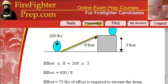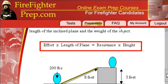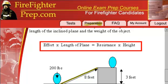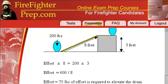There are lots of practice questions on the site — work through them and be familiar with them. I'd recommend you memorize this formula: effort times the length of the plane equals resistance times the height. You might be given different scenarios, such as being given the effort — say 75 pounds — and the length of the plane at 8 feet, and asked how much you could elevate at 3 feet, requiring you to calculate the resistance. Just plug the numbers into the formula, treat it like an algebraic equation, and solve it. Good luck with the studying, and let us know if you have any questions.